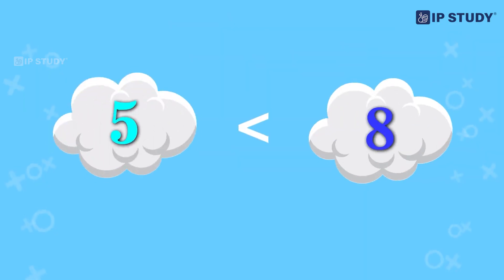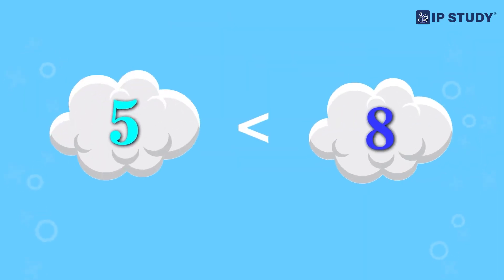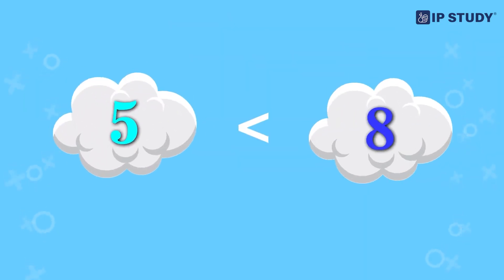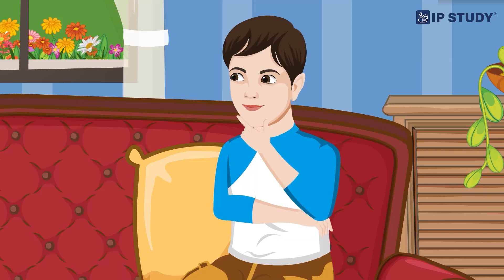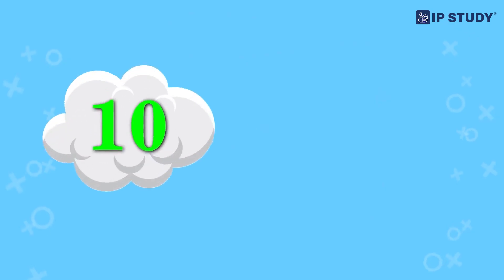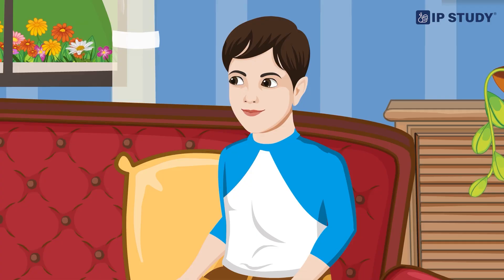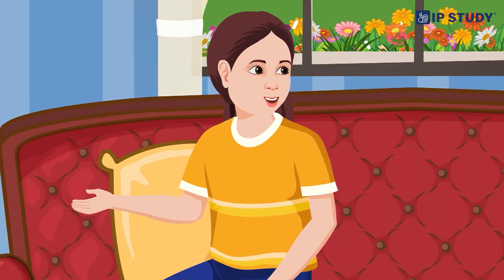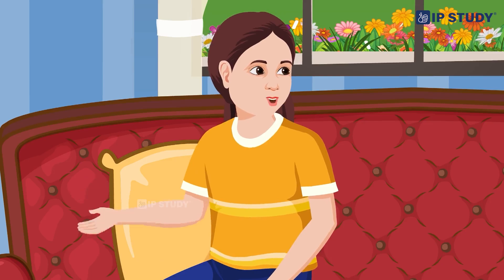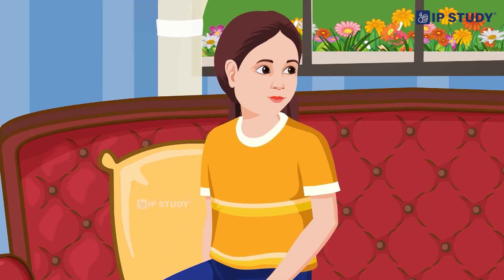For example, 5 is less than 8 because 5 is smaller than 8. Oh, I see! So 10 is greater than 7 because 10 is bigger than 7. Right? Exactly — you are getting it, Aman. That's wonderful!